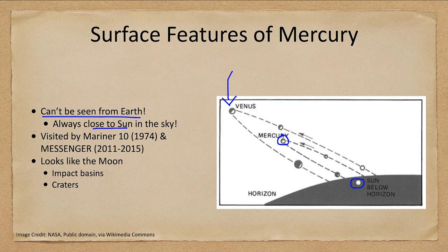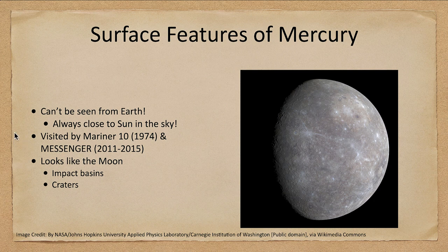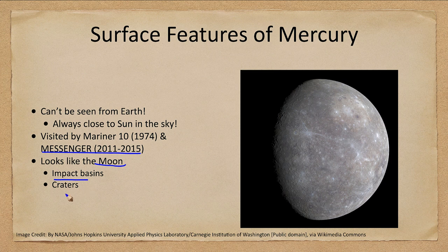We were able to visit Mercury with spacecraft. Mariner 10 in 1974 gave us our first images, and then the Messenger spacecraft gave us far more detail, actually orbiting Mercury for four years from 2011 to 2015. The first thing you might note is that Mercury looks a lot like the Moon — it has some impact basins, although not as many, and lots and lots of craters. It is a heavily cratered surface, which is why we study them together.